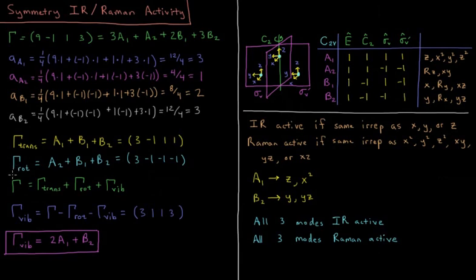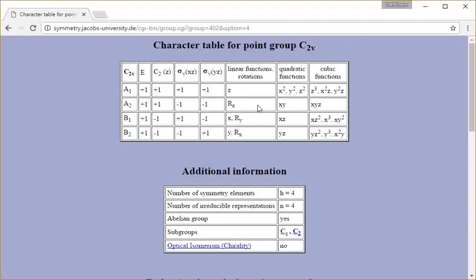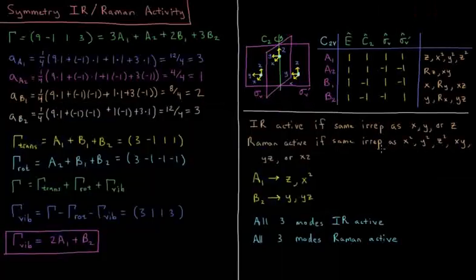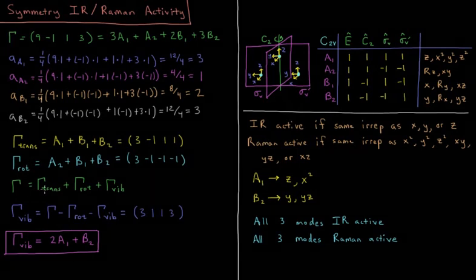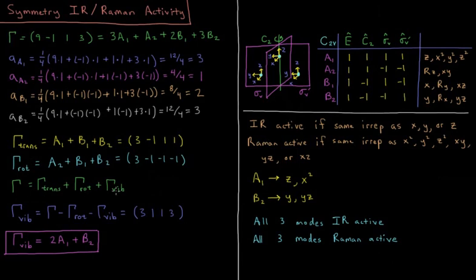For rotations, we're looking for the values in the character tables like RZ, RY, and RX. As you see here in Jacobs, RZ, RY, or X. So that's A2 plus B1 plus B2. Those rows add up to 3, minus 1, minus 1, minus 1. So our total representation, reducible representation here, is translations plus rotations plus vibrations. Those are all the different ways the molecule can move.